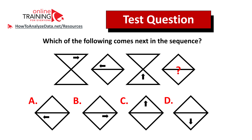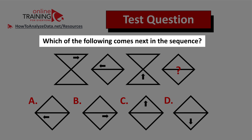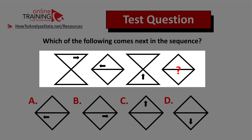Here is a very tricky question which is unusual from the others, but once you know the pattern it is very easy to solve. Which of the following comes next in the sequence? You're presented with a sequence of four items and you need to determine the arrow's location for item number four.